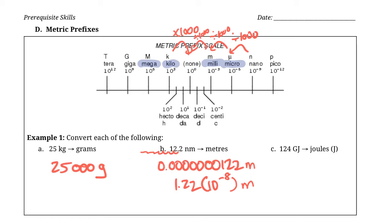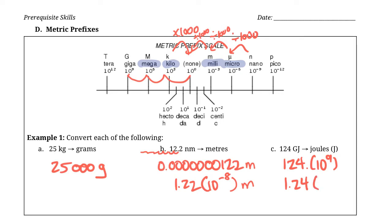Lastly, let's convert 124 gigajoules to joules. Giga is one you should probably remember — it's 10 to the 9, which is a billion. There are a billion joules in a gigajoule, so for 124 gigajoules we're going to multiply by 10 to the 9. We're going three steps down the scale, so we multiply by 10 to the 9. In scientific notation we put the decimal after the first significant digit: 1.24 × 10 to the 11.